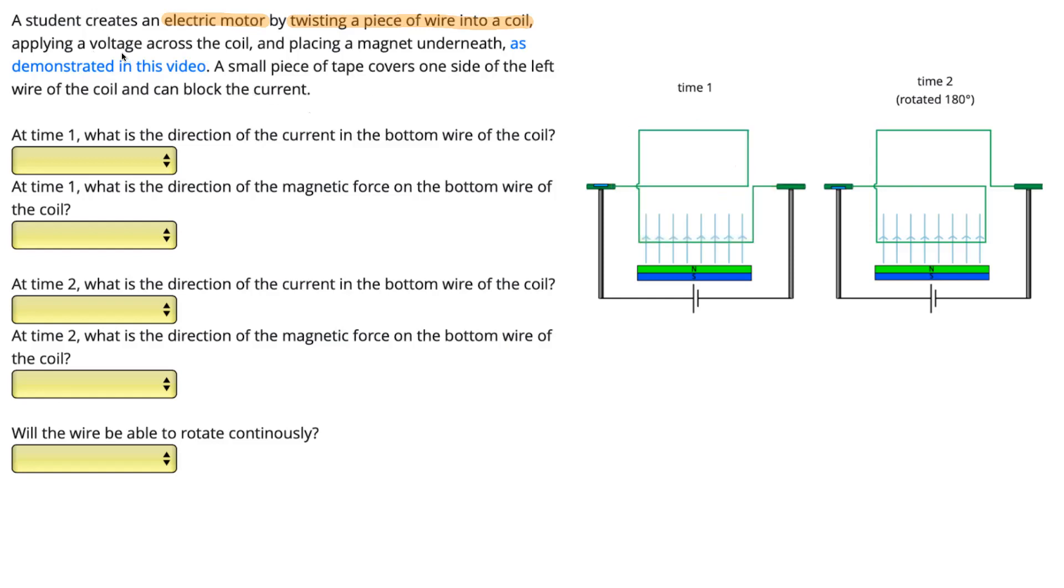They apply a voltage across the coil by attaching it to a battery, and they also place a magnet underneath, shown here with the field shown here.